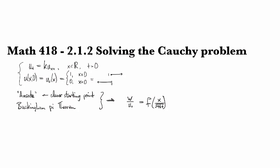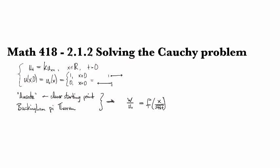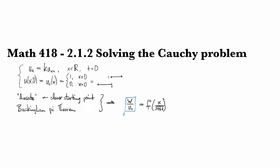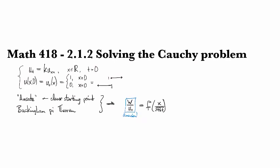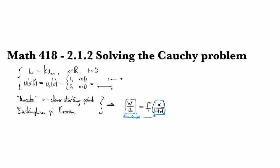And similarly, this expression X over square root 4KT is also dimensionless. So this guy here is dimensionless, and this guy here is also dimensionless.